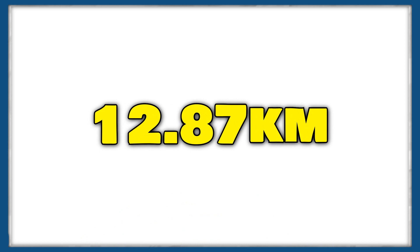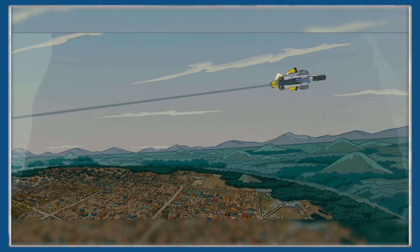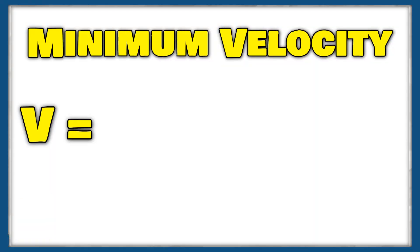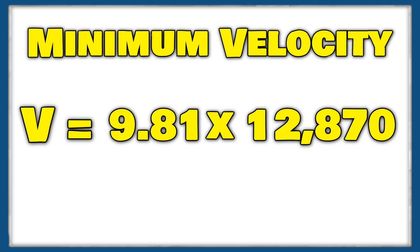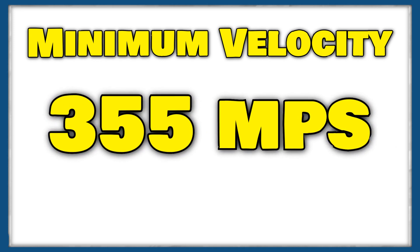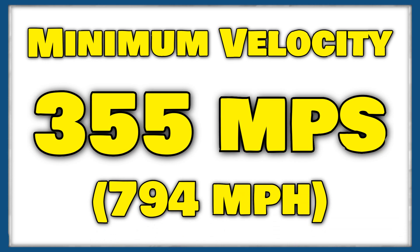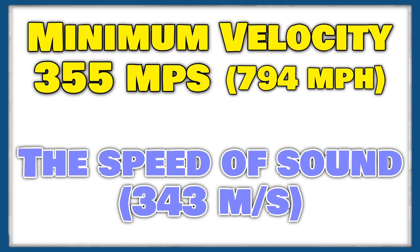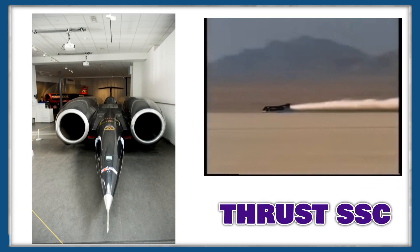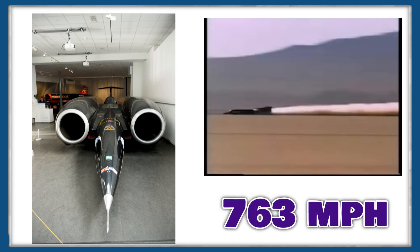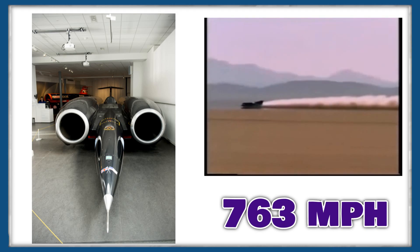Now that we have our radius, it's simple to calculate the minimum speed Homer would need. The velocity equals the square root of 9.81 multiplied by 12,870 meters, giving a minimum velocity of an astounding 355 meters per second, or 794 miles per hour — faster than the speed of sound, which is 343 meters per second. To put this into perspective, the all-time land speed record is held by the Thrust SSC, which reached 763 miles per hour, breaking the sound barrier — but still too slow to get all the way around Springfield's dome.